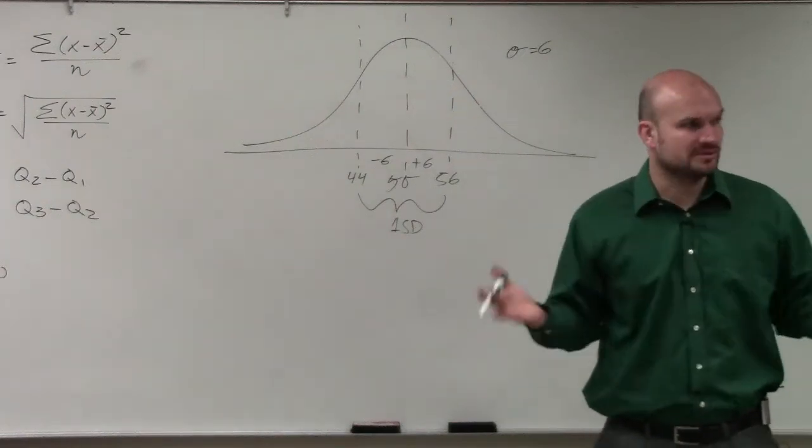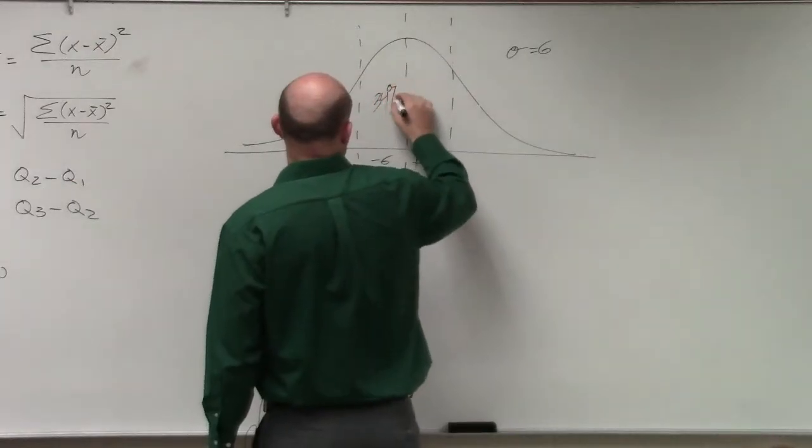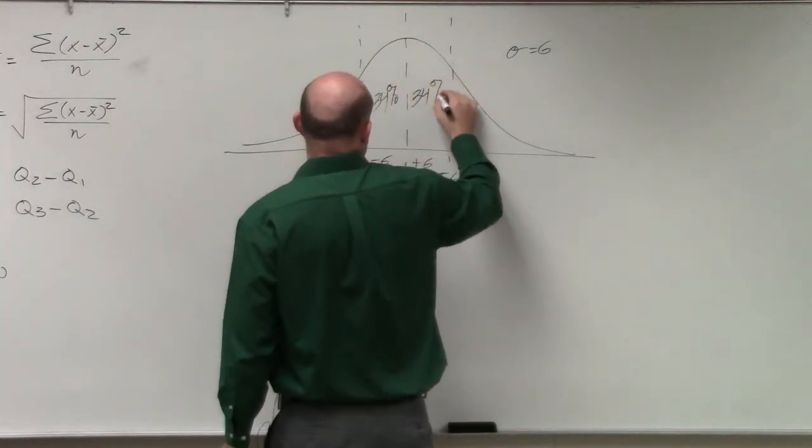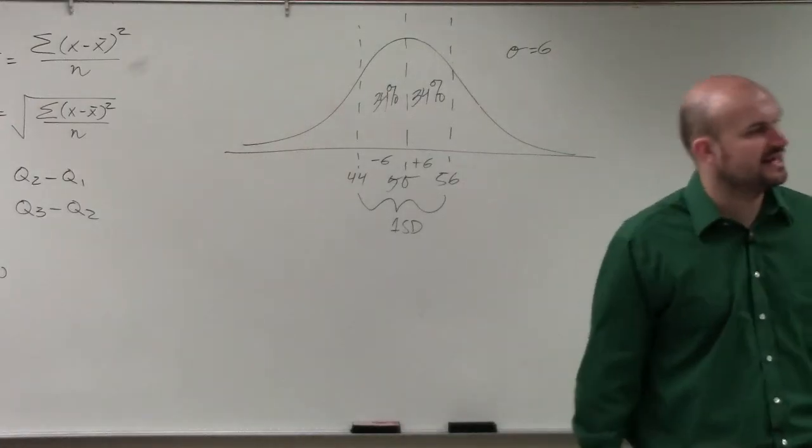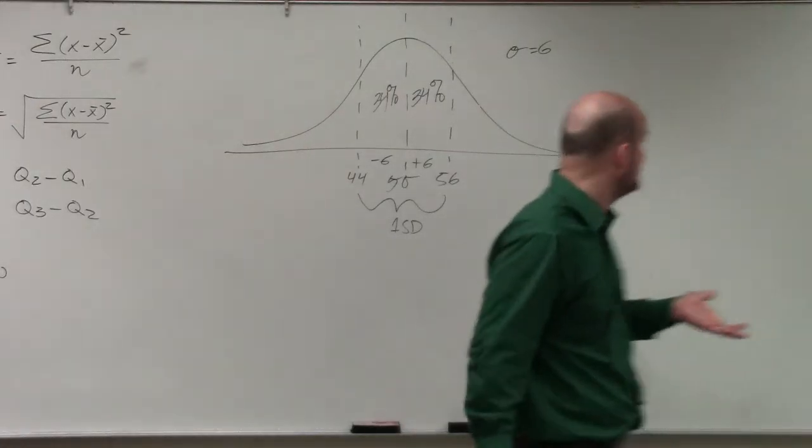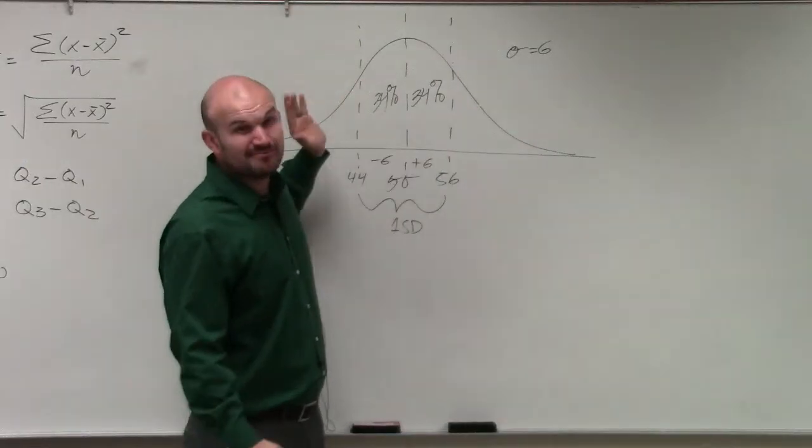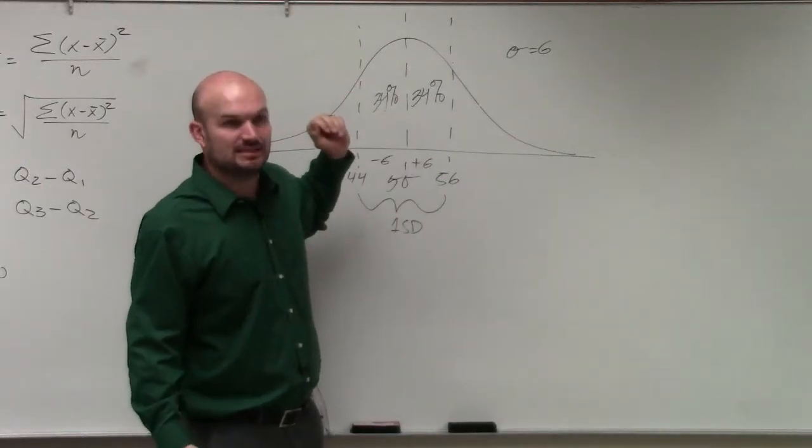Now what's nice about normal distribution is that they can distribute that our percentages of our data collected that fall in a normal distribution curve, the percentage of data that falls within the first standard deviation, is 34% above the mean and 34% below the mean, which adds up to 68%.